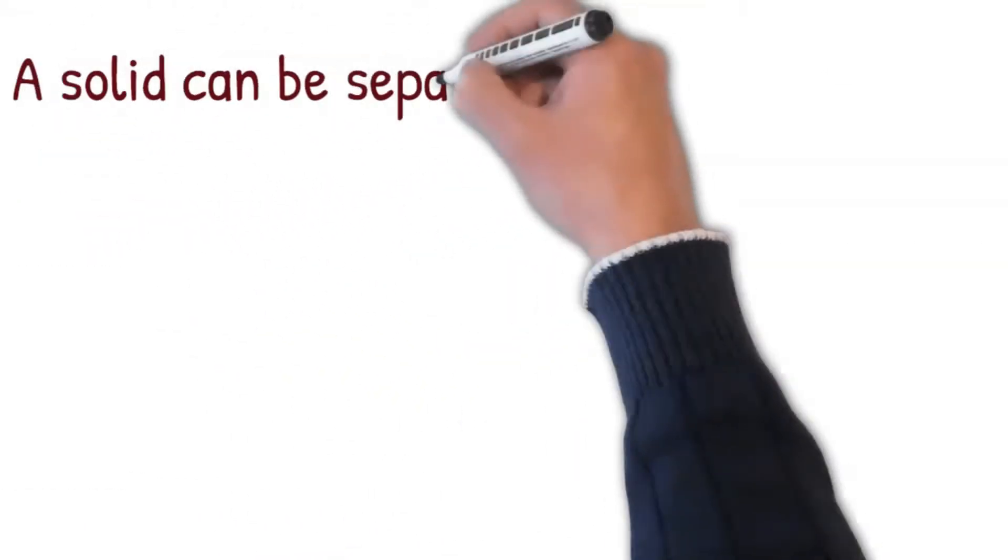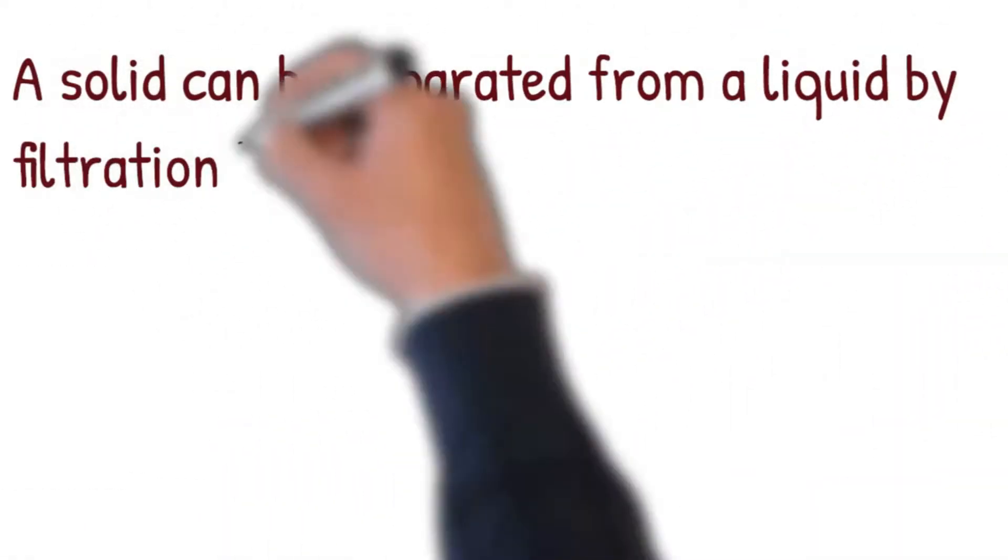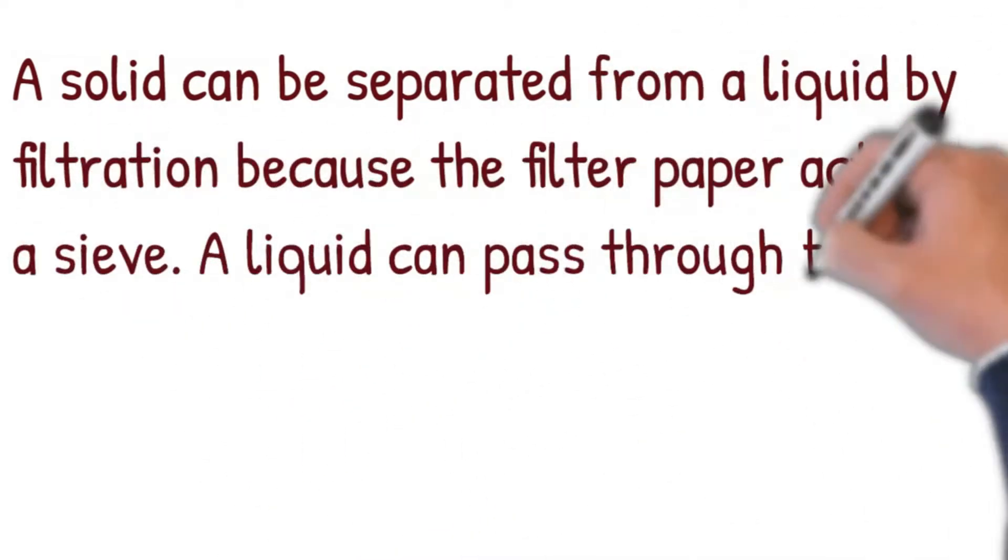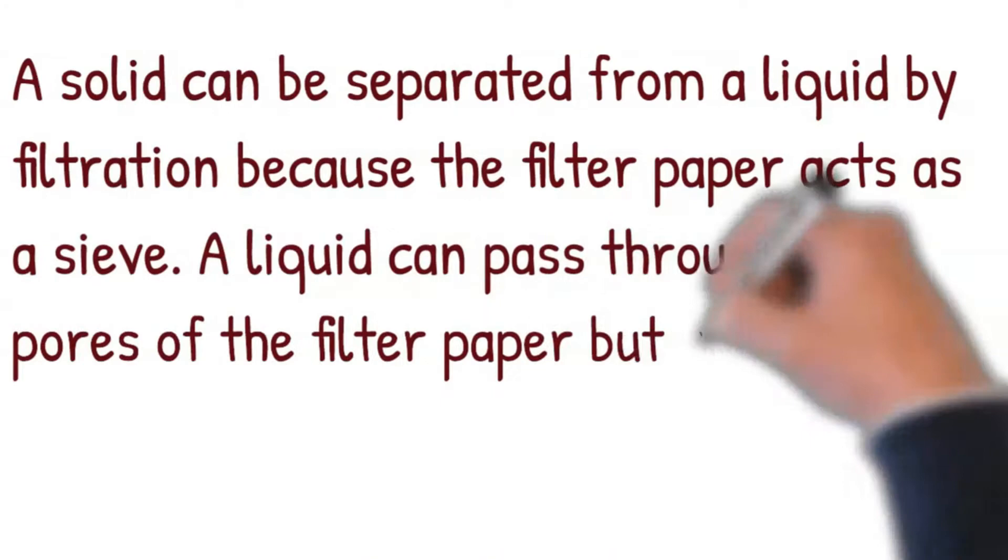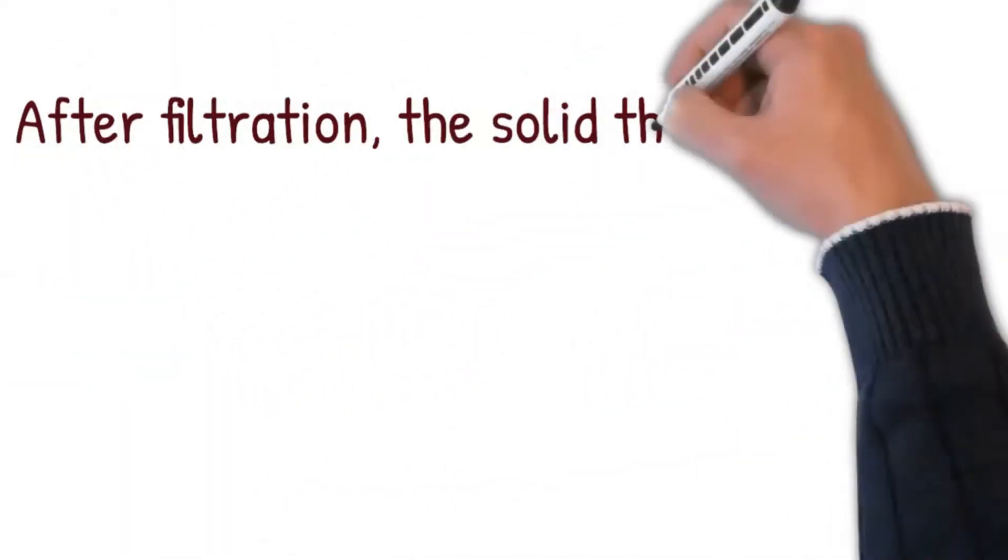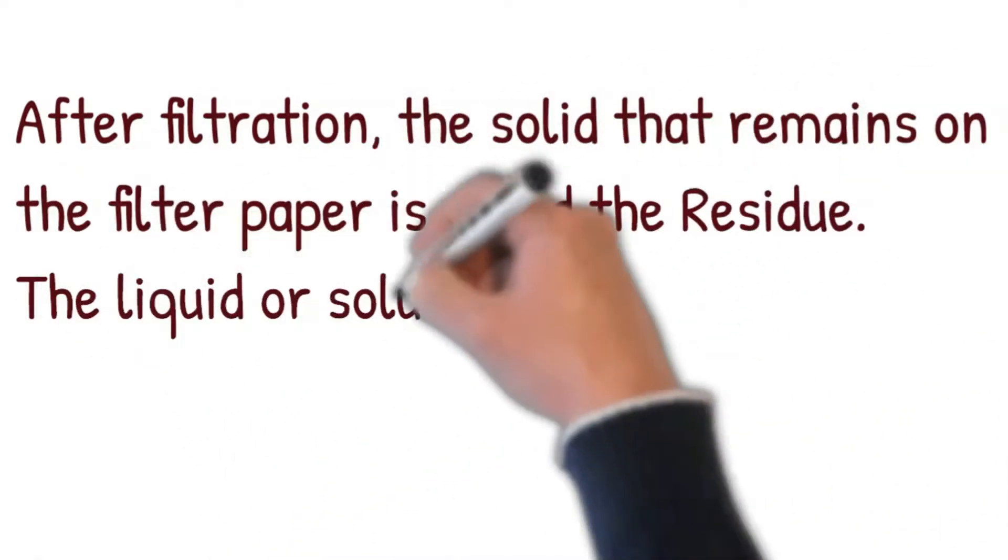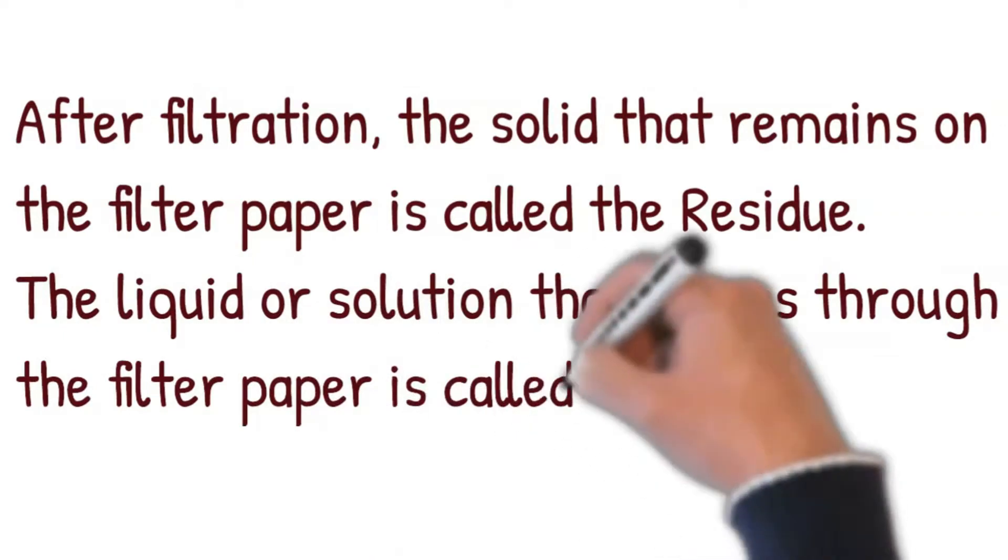A solid can be separated from a liquid by filtration because the filter paper acts as a sieve. A liquid can pass through the pores of the filter paper but a solid cannot. After filtration, the solid that remains on the filter paper is called the residue. The liquid or solution that passes through the filter paper is called the filtrate.